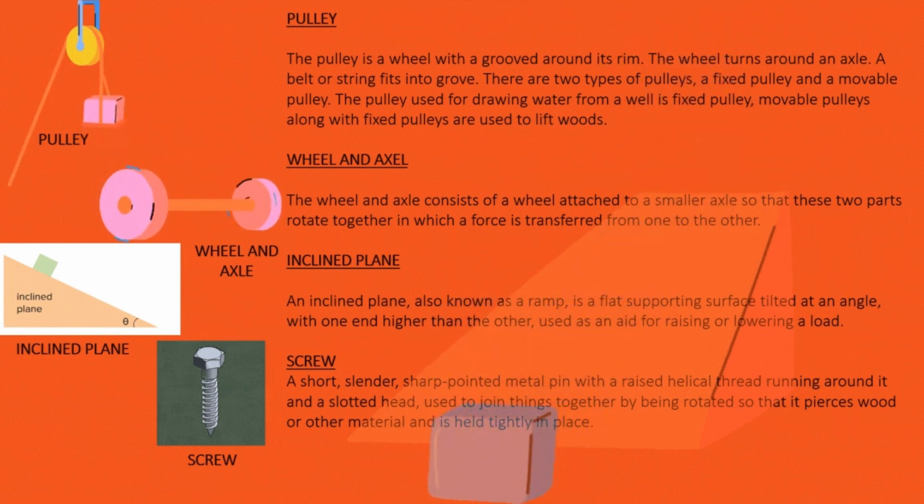Inclined Plane: An inclined plane, also known as a ramp, is a flat supporting surface tilted at an angle with one end higher than the other, used as an aid for raising or lowering a load.